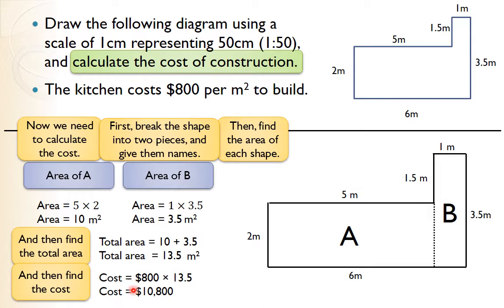If something costs dollars per square meter, you look at how many square meters you have and multiply by that rate. Here: $800 times 13.5 square meters gives a total construction cost of $10,800. That's the end of the question.